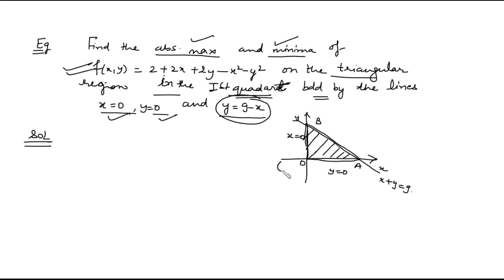The coordinates of O are (0,0), the coordinates of A are (0,9), and the coordinates of B are (9,0). When y=0, we get x=9, and when x=0, we get y=9 from the equation x + y = 9. We have to find the absolute maxima and minima of the function over this bounded triangular region.